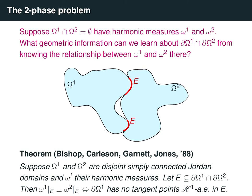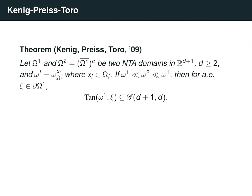It was conjectured by Bishop that something similar should be true for domains in higher dimensions, but because their proof in the plane relied on complex analysis, newer techniques were required. About 20 years later, a breakthrough was found by Kenig, Preiss, and Toro. They showed that for two complementary NTA domains, if their harmonic measures were mutually absolutely continuous on their common boundary, then the tangent measures of the harmonic measures are flat at almost every point in their common boundary. This was a big leap towards solving the problem: while it doesn't yet imply rectifiability, it still gives geometric information about the boundary. As we zoom in at almost any point, not only is the harmonic measure beginning to resemble a flat measure, but the boundary itself is getting flatter and flatter. However, it may not necessarily be converging towards one plane — the domain could still be spiraling as we zoom in, but still getting flatter and flatter.